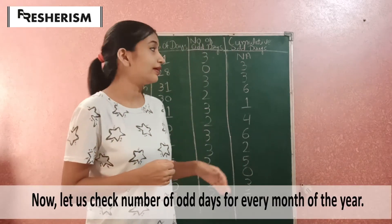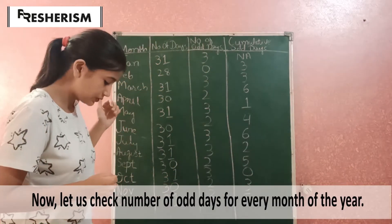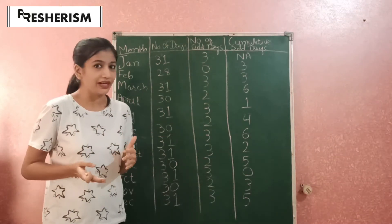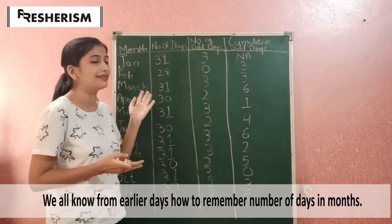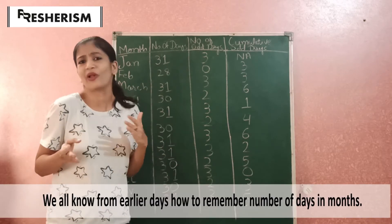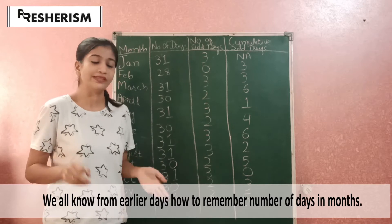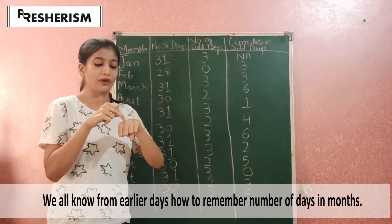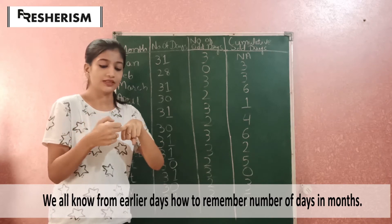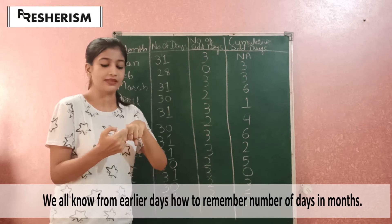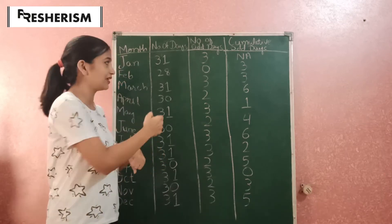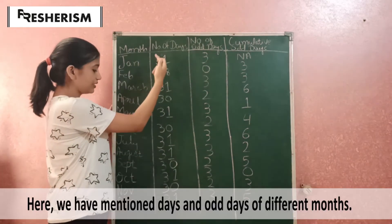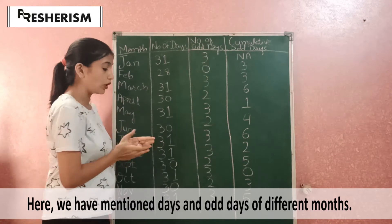Let's check the number of odd days in every month. There are 12 months, and you might already know how to memorize the number of days in a month using knuckles — as we learned in preschool. Counting from the knuckles: January has 31 days, February has 28 days, then 31, 30, 31, 30 and so on. These are the number of odd days for each month.